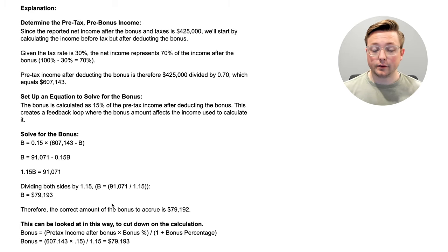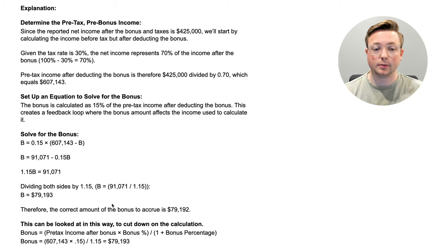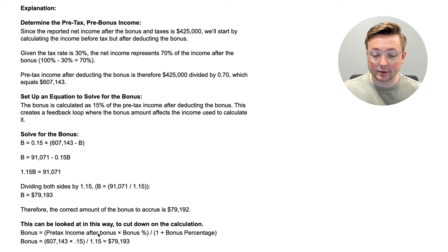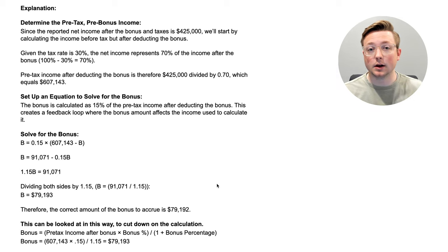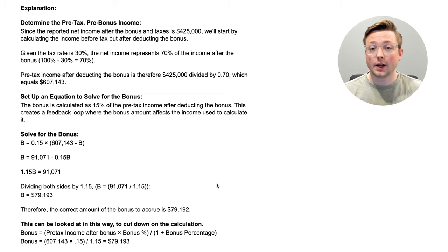This is something I found very confusing, and if you're still confused too, that's okay. The key takeaway: when a bonus is based on pre-tax income after the bonus, take the pre-tax income after the bonus, multiply it by the bonus percentage, divide that by 1 plus the bonus percentage, and that gives you the bonus amount. You might see a question like that on the exam, so I wanted to make sure I went over that.